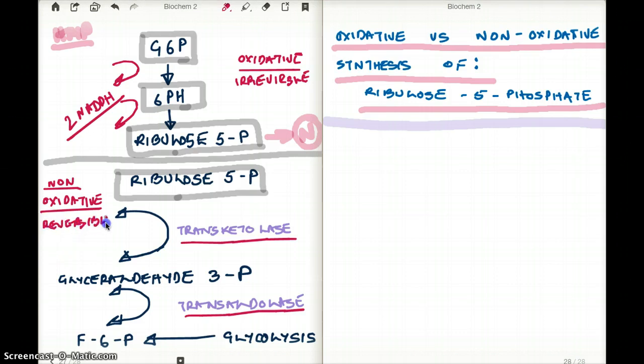Now another important thing about this is, as they're converting fructose 6-phosphate to glyceraldehyde 3-phosphate to ribulose 5-phosphate, they're transferring two carbons at a time. These are carbon transfer molecules. Transketolase and transaldolase really transfer two carbons at a time.